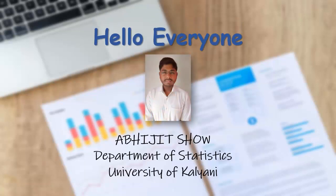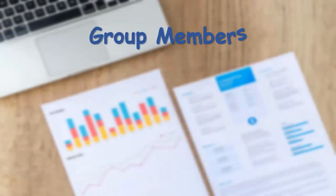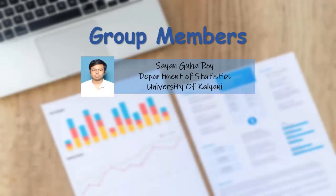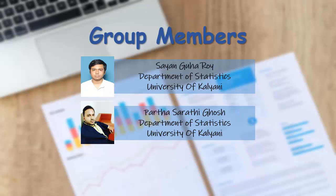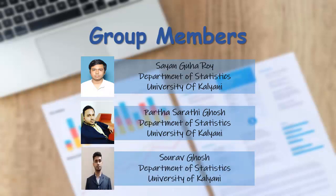Hello everyone, my name is Abhijit Shau and I am a final year MSc statistics student from University of Kulani. My group members are Shayan Guho Roy, Partho Saruti Ghosh and Saurav Ghosh.